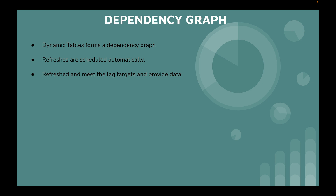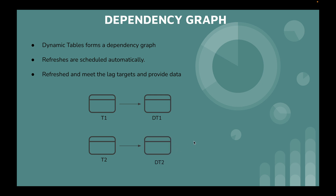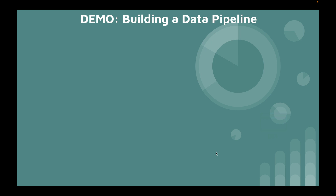The dependency graph shows the relationships between tables. For example, if you have a base table T1, a dynamic table DT1 built on it, a normal table T2, a dynamic table DT2 built on both, and further downstream tables DT3 and DT4, this entire structure is visualized in the Snowsight UI showing target lags and refresh status. In the next session, a demo will show how to build a data pipeline using dynamic tables.